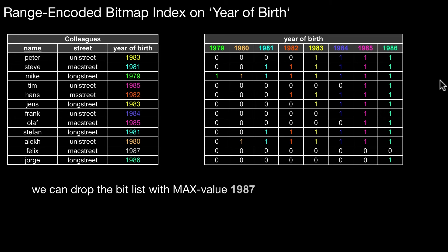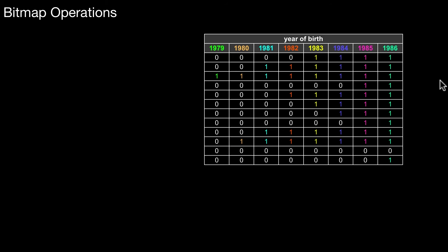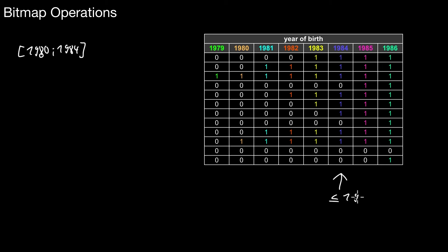Now the interesting question is how to process queries. Let's go back to our initial example: we're interested in colleagues born in the range 1980 to 1984 inclusive. To get everyone born in 1984 or smaller, we look at the 1984 bitlist — this gives everything smaller or equal to 1984. But we have to remove those born in 1979 or younger, which corresponds to the 1979 bitlist — everything smaller or equal to 1979. So we only need to concentrate on those two bitlists.